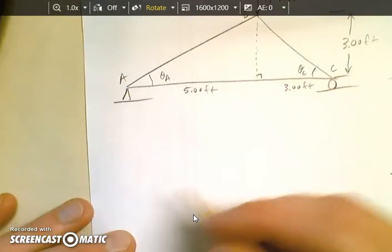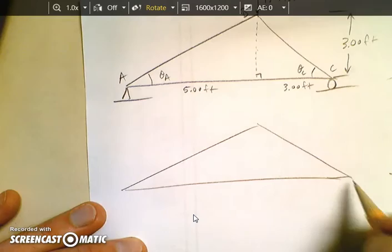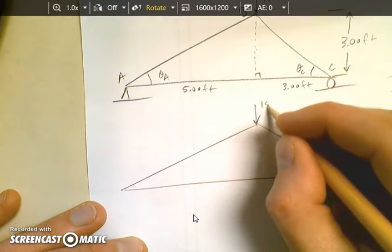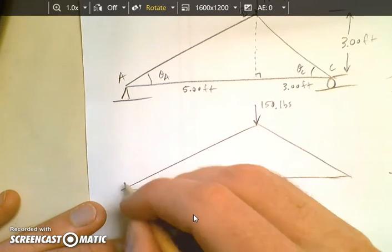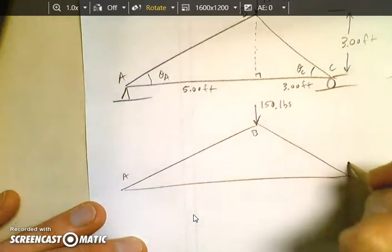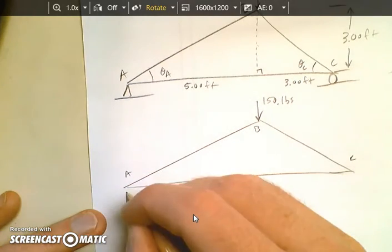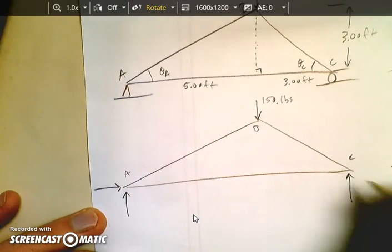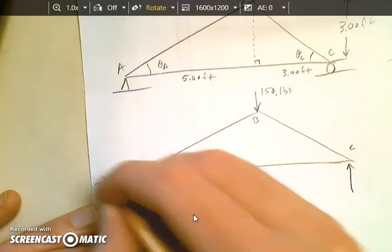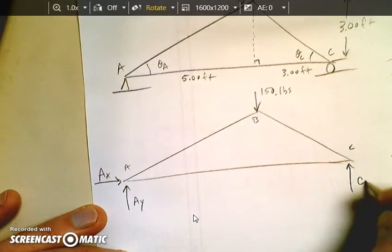Second step is find the free body diagram. Draw a free body diagram. So I'm just going to redraw it. I've got my 150 pounds here. Still A, still B, still C. I'm going to replace that pin with two reaction forces and the roller with one. We're going to call this AY and AX. We'll call this CY.